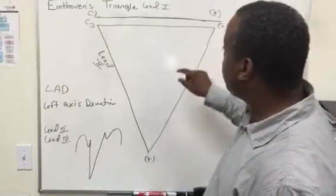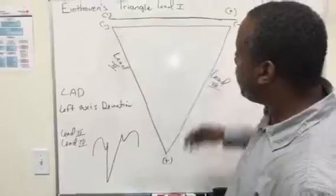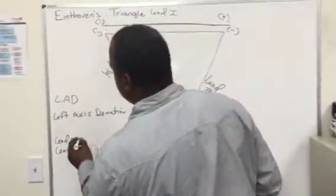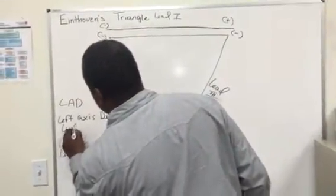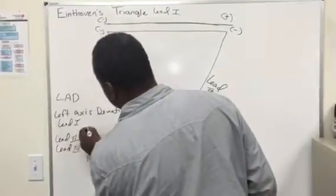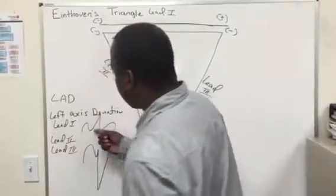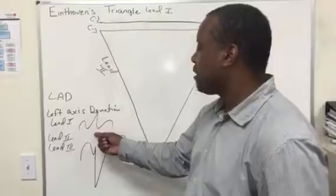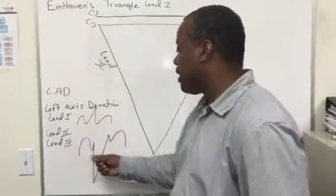You might see different when you look at lead one. In lead one, you can have it flowing the normal way, so you might see a normal upward QRS complex. However, you will see it inverted in lead two and three.